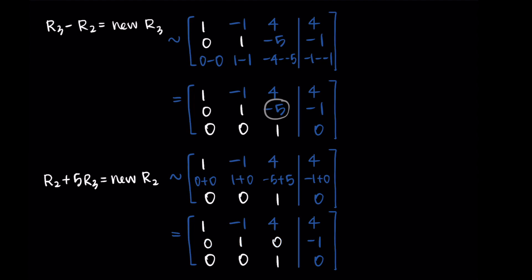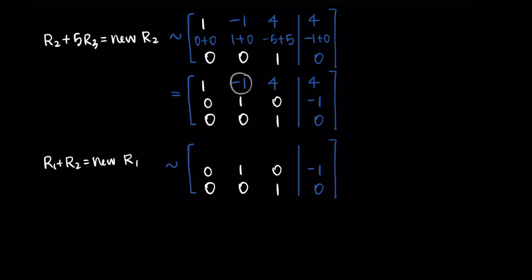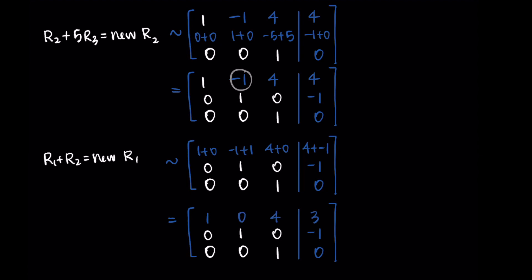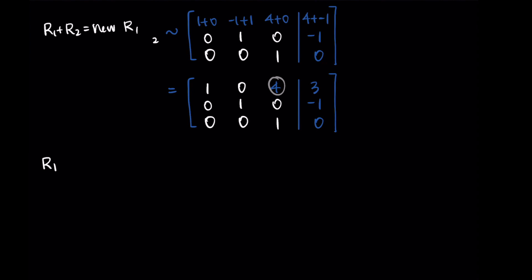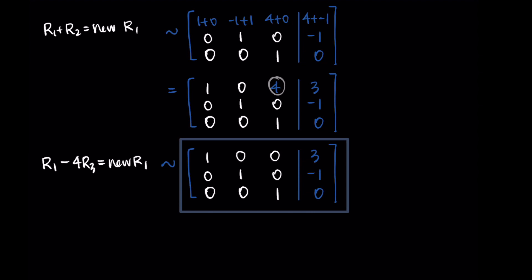We're making progress — just the top row left. Now I work on the negative 1 in the top row; I want it to become zero. Adding row two to row one: 1 plus 0, negative 1 plus 1, 4 plus 0, 4 plus negative 1. That gives me 1, 0, 4, 3. Almost there — I just have that 4 left to eliminate. Taking row one minus four times row three as my new row one gives 1, 0, 0, 3. After a lot of steps, we made it — this is our reduced row echelon form.